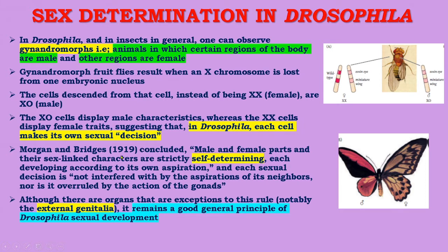In 1919, Morgan and Bridges concluded that male and female parts and their sex-linked characters are strictly self-determined, each developing according to its own aspiration. Each sexual decision is not interfered with by its neighbors, nor is it overruled by the action of the gonads, although external genitalia are an exception. This remains a good general principle of Drosophila sexual development.